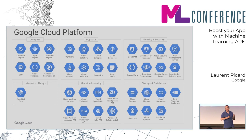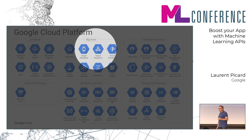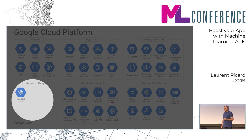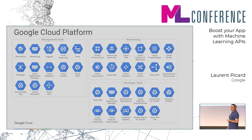The machine learning APIs are part of Google Cloud Platform. Google Cloud Platform is made of roughly 70 different cloud services. They are sorted by family — you can do computing, big data, storage, databases, security, IoT, and machine learning. Also everything related to development tools, deploying your solution in the cloud, securing everything, and networking.